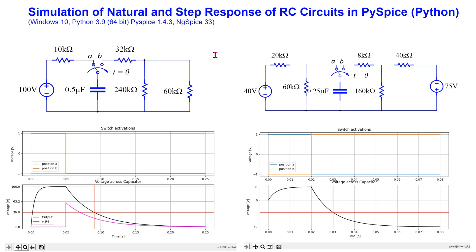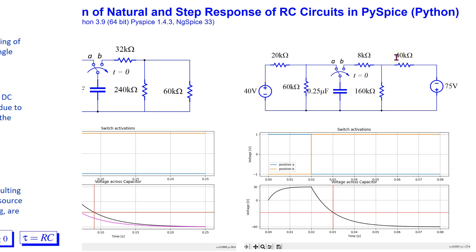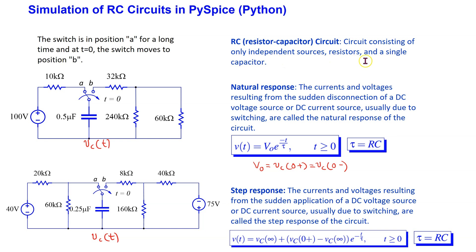In this video, I will explain the correct way to set up RC natural and step response circuits in PySpice. Recall that an RC circuit is a circuit consisting of only independent sources, resistors and a single capacitor. Under natural response, there is a sudden disconnection of DC sources, and under step response, there is a sudden application of a DC source. Under natural response, there will be no DC source in the circuit after switching takes place. For a step response, there will be a DC source in the circuit after switching takes place.